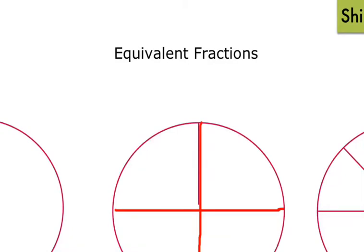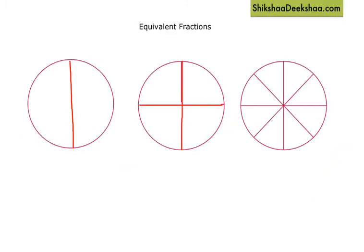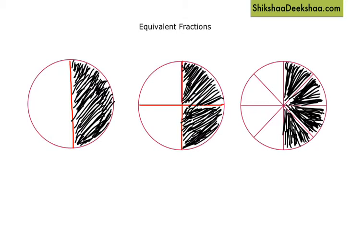Let's understand what equivalent fractions are. Imagine there are three cookies and I give you the shaded part from each cookie — I actually end up giving you the same amount from each. I am giving you half from each cookie, but as you can see, I divided the first cookie into two parts, the second into four parts, and the third into eight parts.